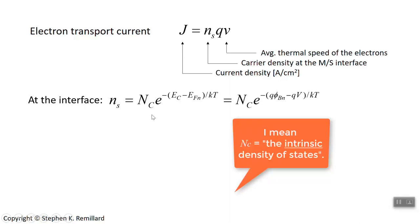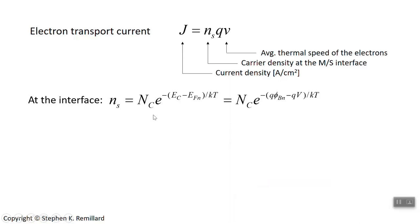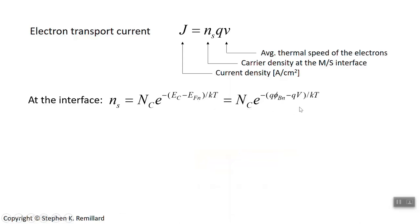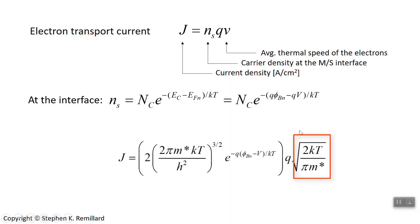N_c is temperature dependent. Using the relation E_c − E_Fn = q·φ_bn − q·V derived from the energy band diagram, we can substitute and recognize E_c − E_Fn as equivalent to q·φ_bn − q·V. Making that substitution gives a more practical expression, replacing the quasi-Fermi level — which is not a directly measurable quantity — with the applied voltage V, which certainly is. For the average velocity v, we use the Maxwell-Boltzmann result: v = √(2kT / π·m*).